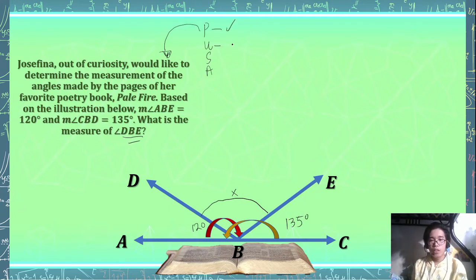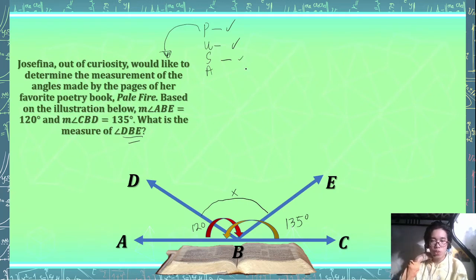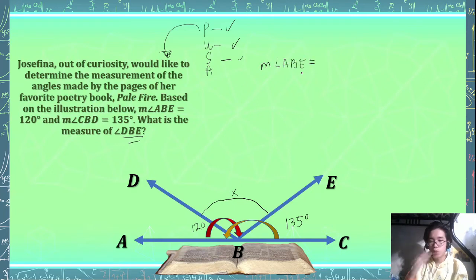We've understood the problem. For our solution, we're going to use the angle addition postulate. Using the angle addition postulate, we can decompose the measurement of angle ABE.